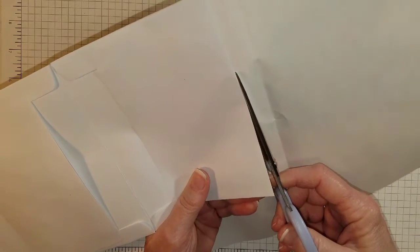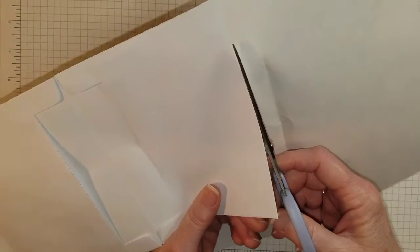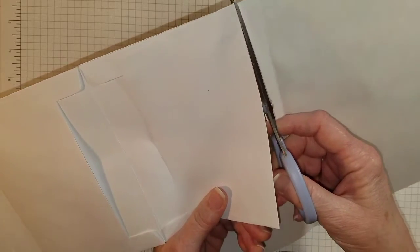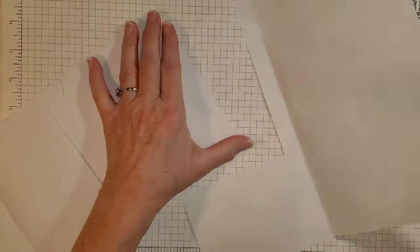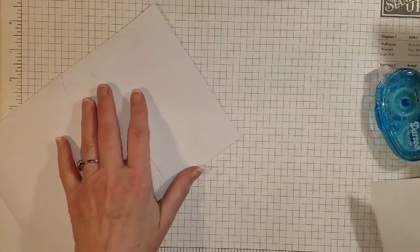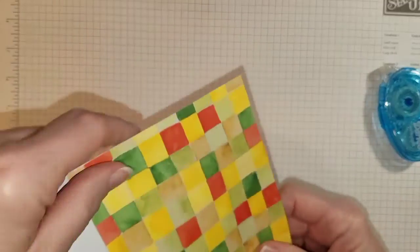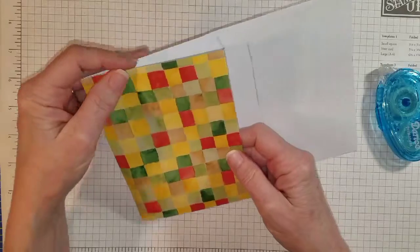If you don't have the glue runner, you can use any kind of glue really that works best for you. Elmer's glue works well, glue sticks, anything like that will work. You just kind of have to experiment.